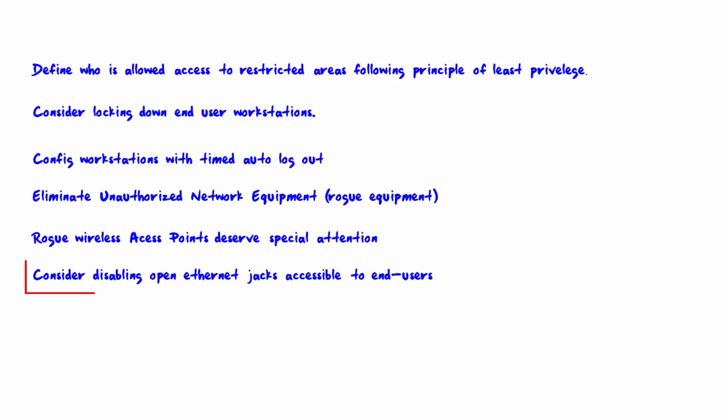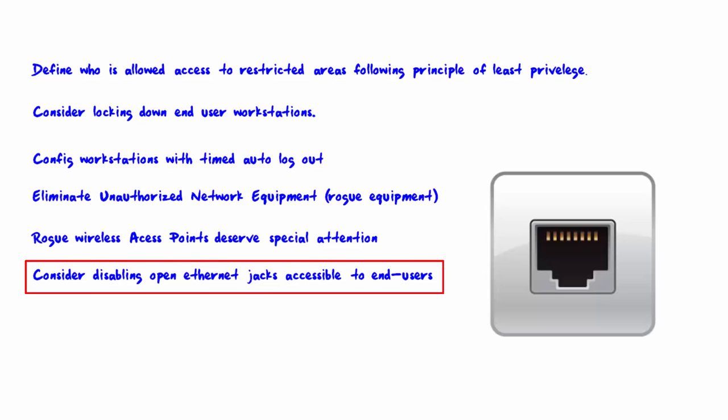Also consider disabling open Ethernet jacks accessible to end users. Since most rogue equipment must be plugged into an Ethernet jack, disabling them will go a long way toward preventing the problem. Cisco does allow you to disable ports on switches.